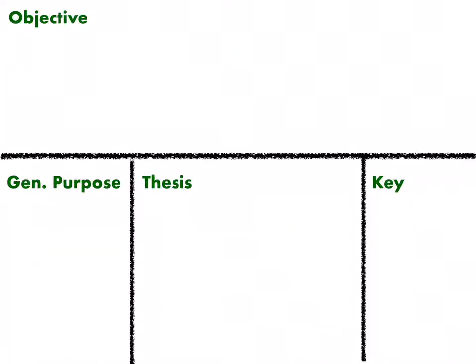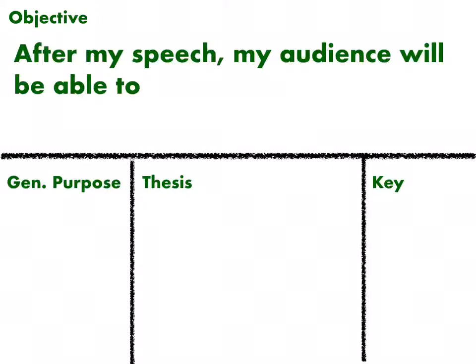The objective is what your audience will be able to do when you are done with your speech. It starts with the statement: after my speech my audience will be able to. Then you have to select a verifiable verb — those are in the middle of page 9 in your packet. The most common verifiable verbs are list and explain, and there are a bunch of them there that you can pick from.